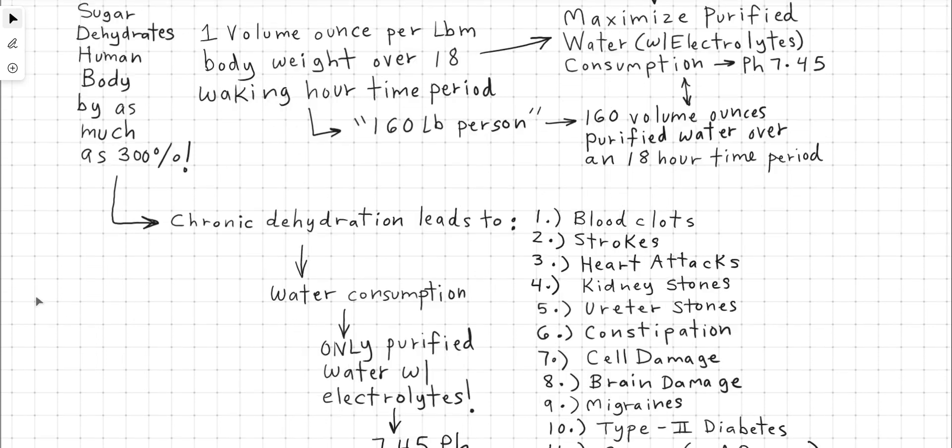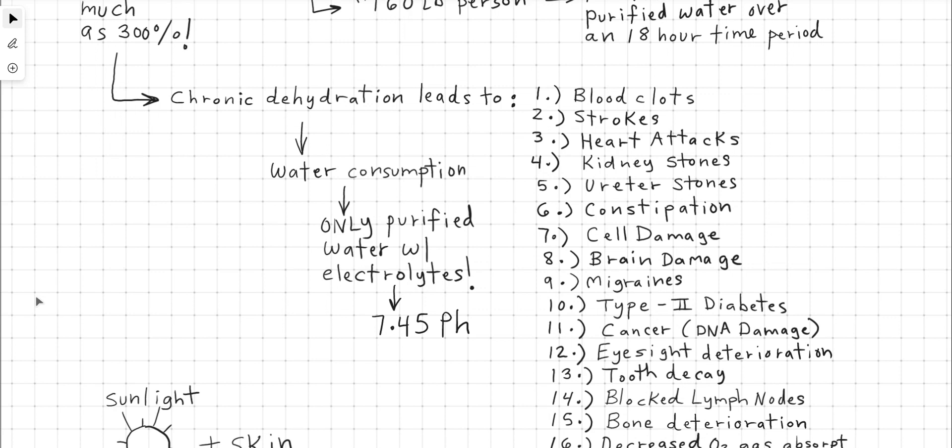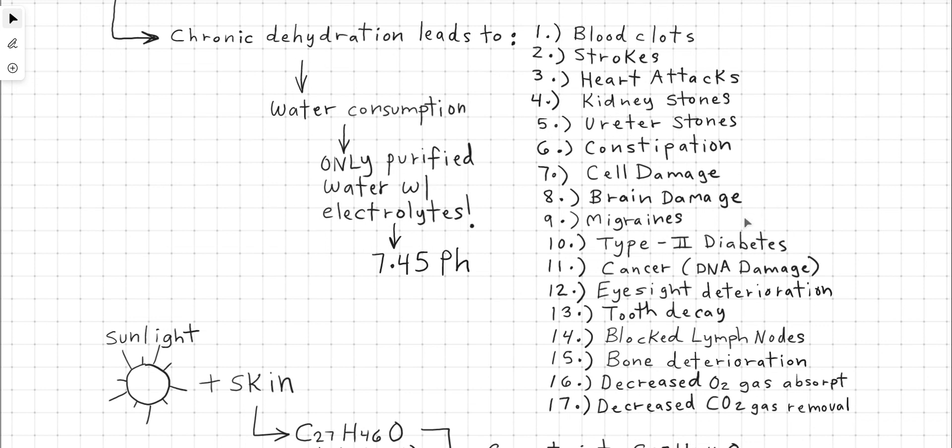The next point, very important in this lecture on biophysics of health is chronic dehydration leads to blood agglutination. This is when the blood dehydrates and its viscosity goes up and then it eventually plasticizes in the blood vessels and clogs the arteries and veins and small blood vessels. Chronic dehydration leads to blood clots, strokes, heart attacks, as well as crystallization of toxins within the kidneys and the ureters. So you get kidney and ureter stones. This also dehydrates the GI tract leading to constipation will then lead to cell damage, brain damage, migraine headaches, type two diabetes, DNA damage, which can eventually manifest as cancer, eyesight deterioration, tooth decay, blocked lymph nodes, bone deterioration, decrease oxygen gas absorption and decrease CO2 carbon dioxide gas removal.